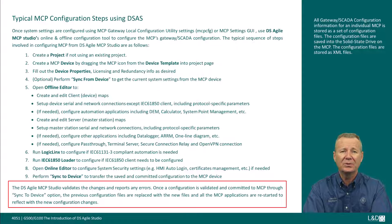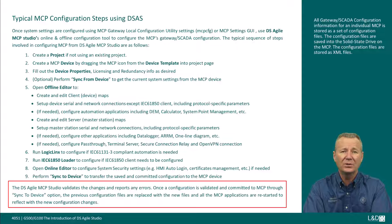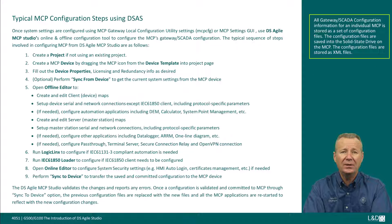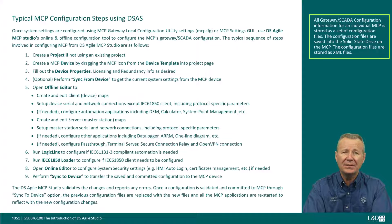DS Agile MCP Studio validates the changes and reports any errors. Once a configuration is validated and committed to the MCP through the sync to device option, the previous configuration files are replaced with new files and all MCP applications are restarted to reflect the new configuration changes. All gateway/SCADA configuration information for an individual MCP is stored as a set of XML configuration files saved into the solid-state drive on the MCP.